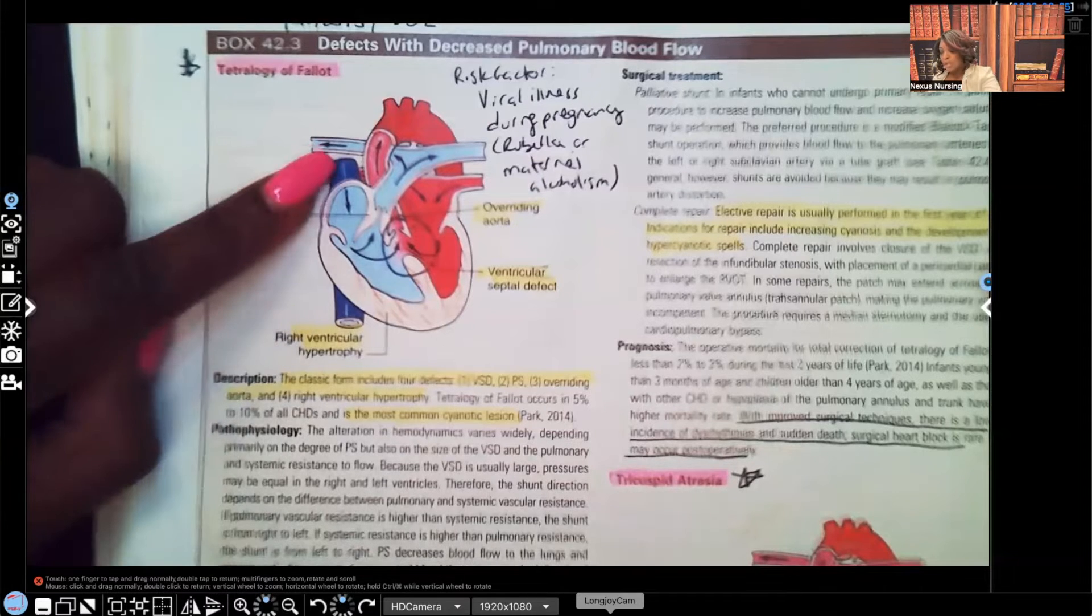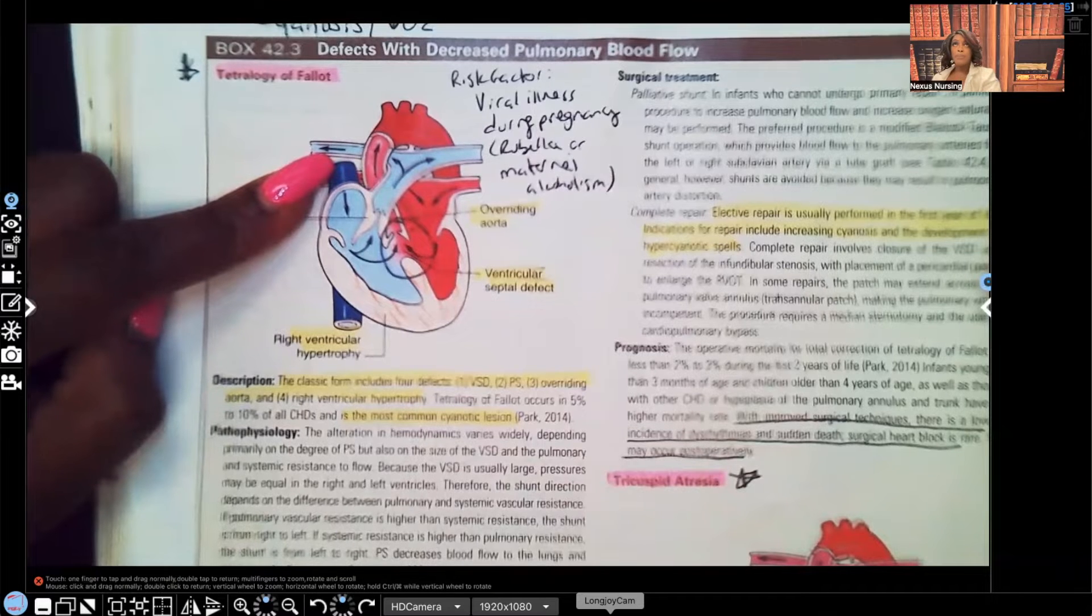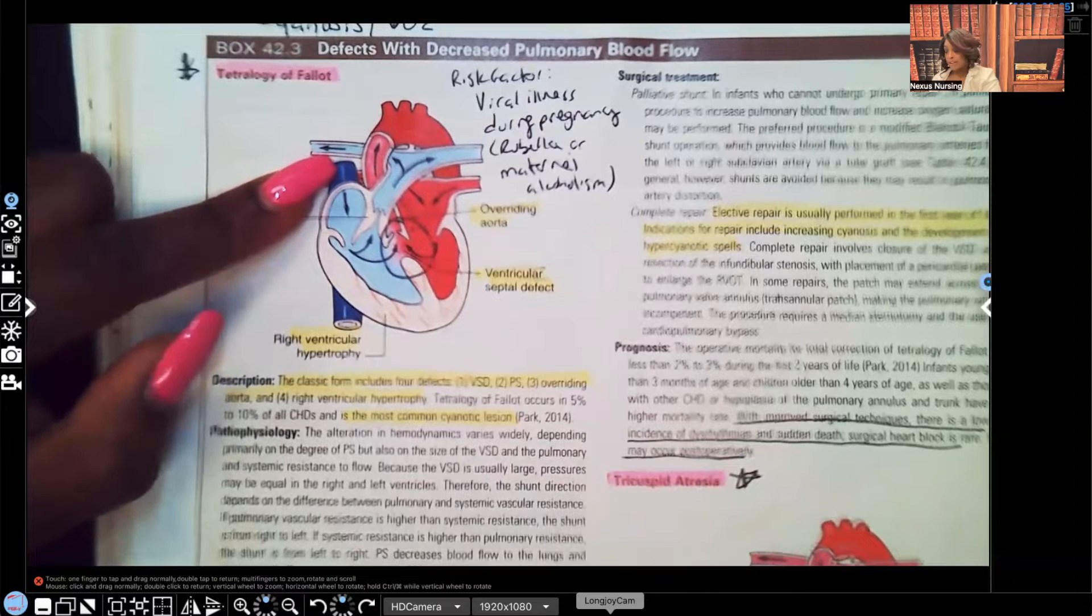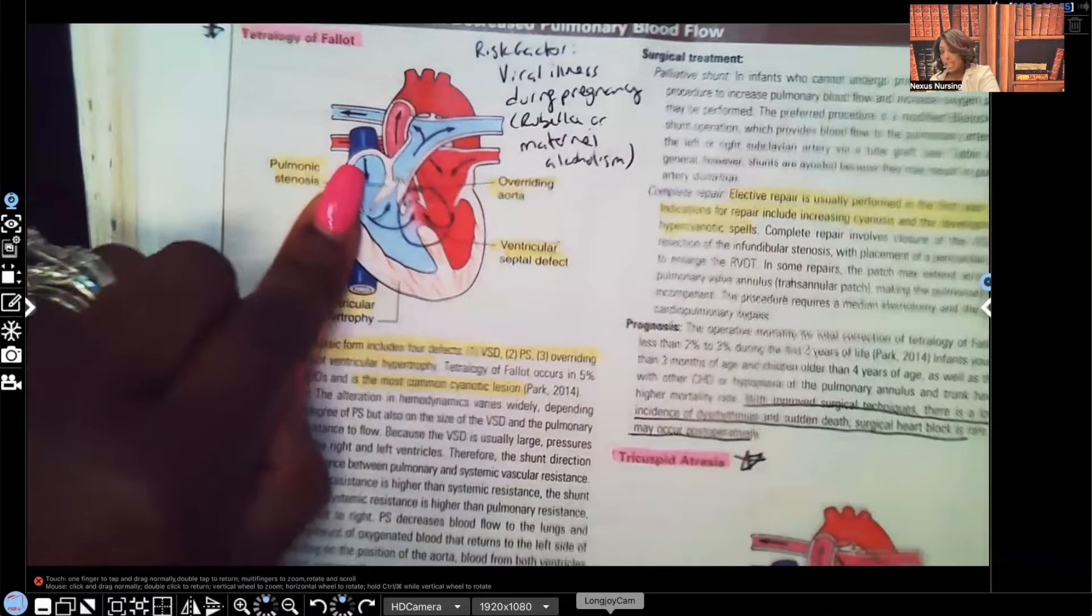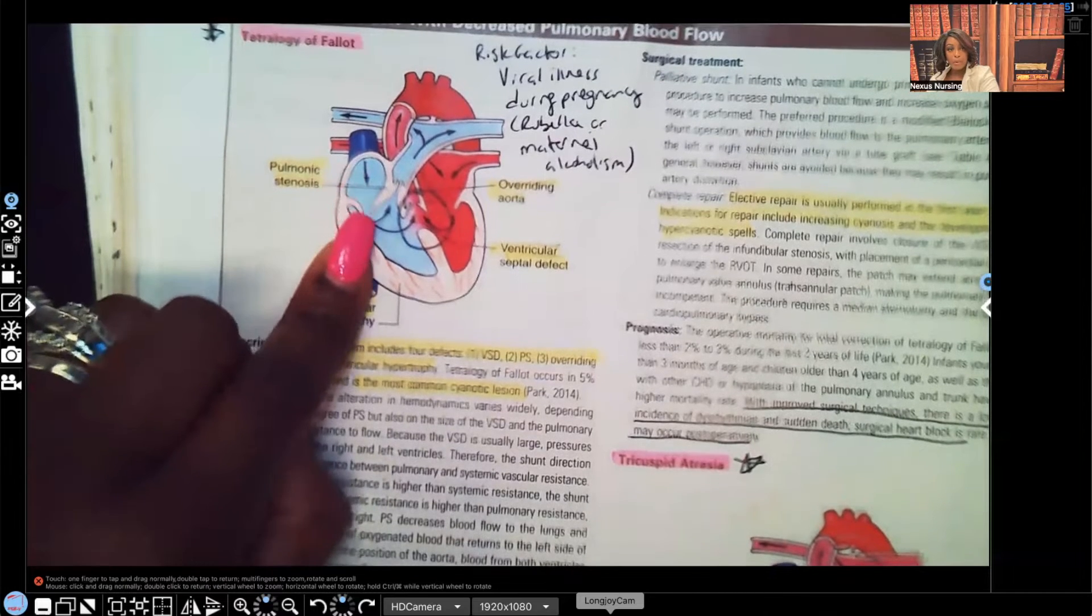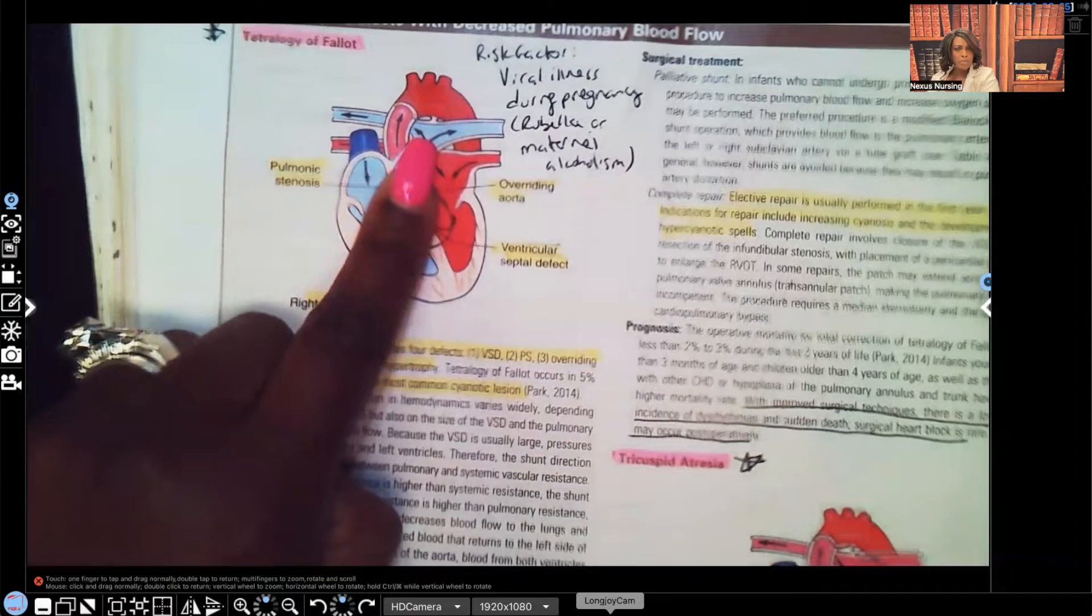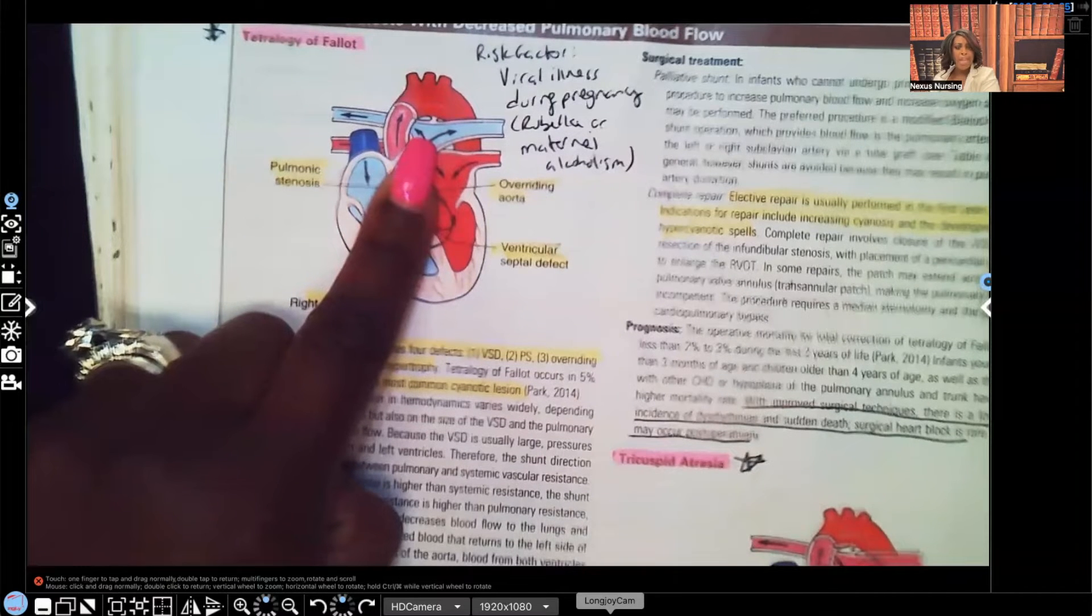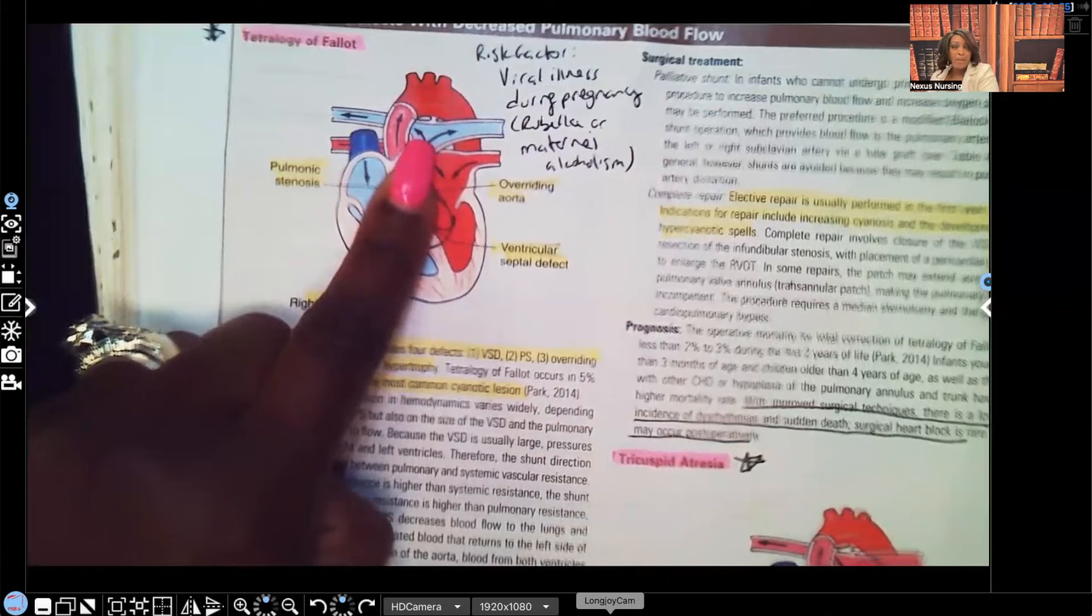So let's take a look at what's happening. Remember how the unoxygenated blood is supposed to be coming through the superior and inferior vena cava. It comes through here on the right side, goes through the atrium and it's supposed to go down through the ventricle, and then go up through the pulmonary artery to go pick up oxygen. Because remember this blood is unoxygenated, there's no oxygen in the blood. It has to go to the lungs to pick up oxygen.